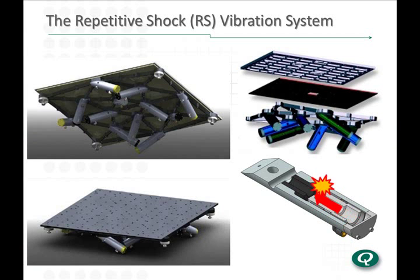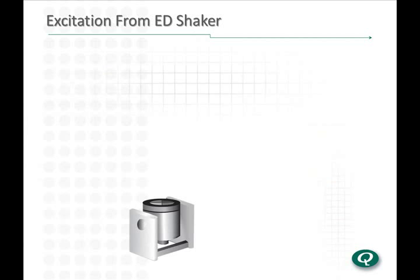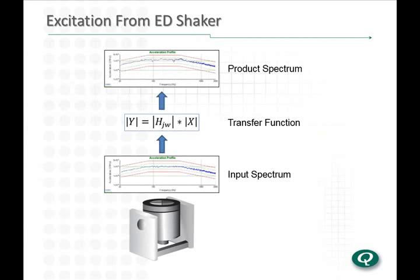The table is driven by continuous repeating shocks from these actuators. When using an ED shaker, the table vibration is the only mechanical stress delivered to the product. The final excitation to the product is the table top vibration, filtered by the fixture and product transfer function.